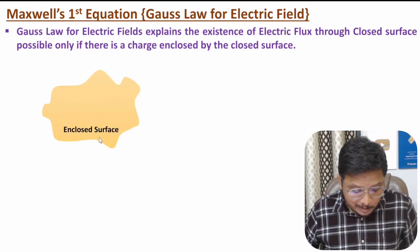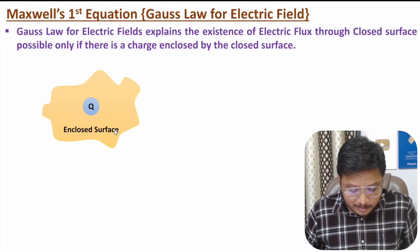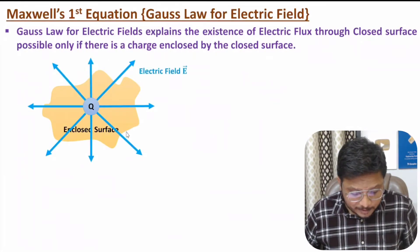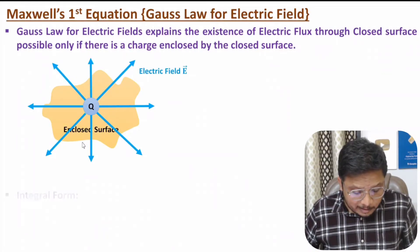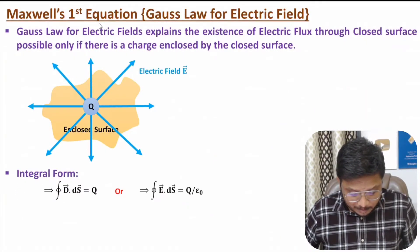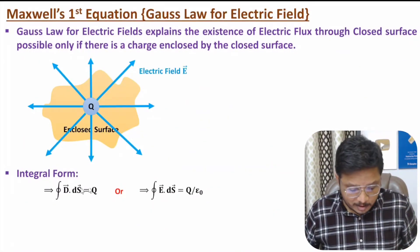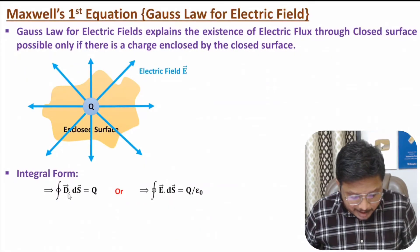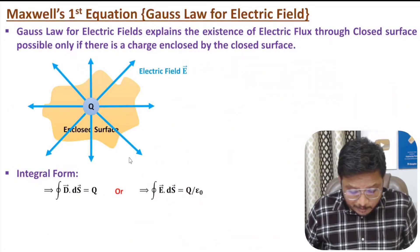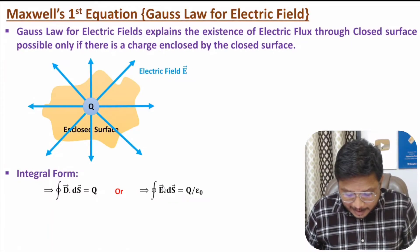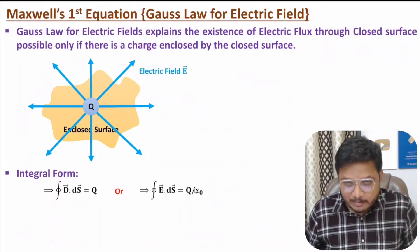If we have an enclosed surface and there is a charge inside this enclosed surface, then only there is a resultant electric flux passing through this enclosed surface. The integral form of Maxwell's first equation states that total flux passing through the enclosed surface equals the charge within it. If you represent flux by D·dS, then that equals the charge. But if you represent flux in terms of electric field as E·dS, then that equals charge divided by epsilon.